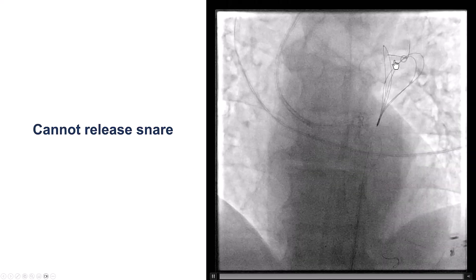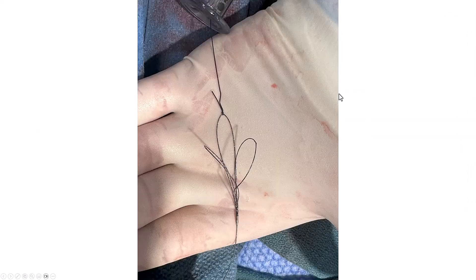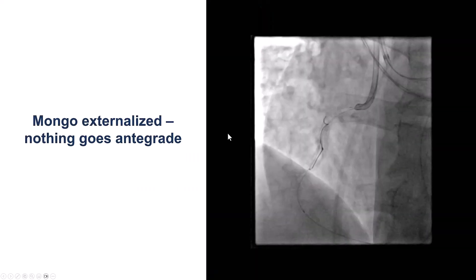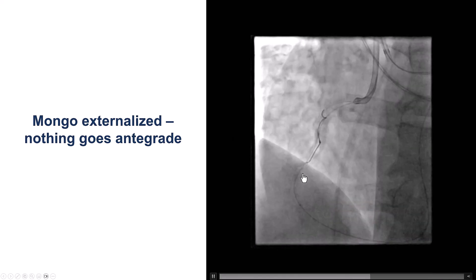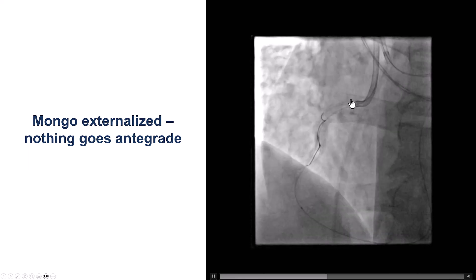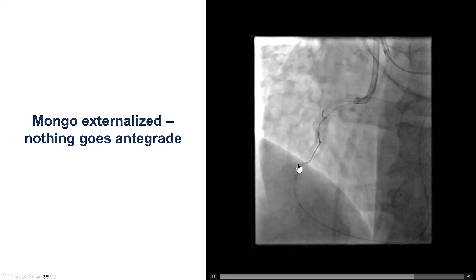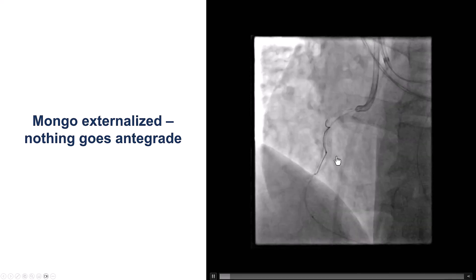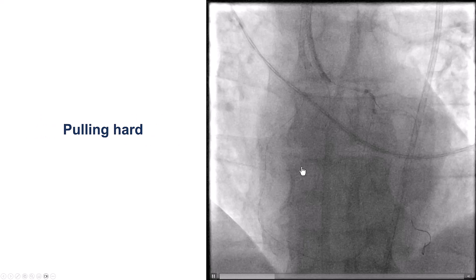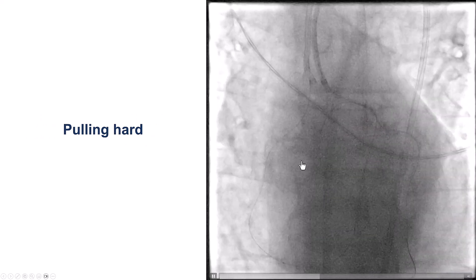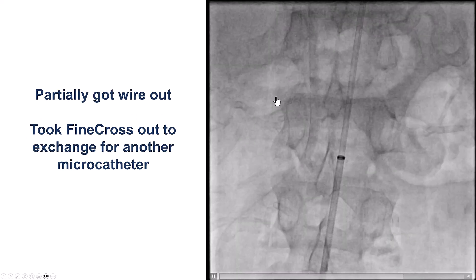As often happens with snaring, we could not release the snare, so we ended up externalizing. This is the snare bringing back the Gladius-Mungo guide wire. We thought that after externalizing we should be able to go antegrade and treat the lesion, but unfortunately we couldn't deliver anything antegrade. Likely because of a combination of calcification and tortuosity, no balloon would go past the proximal RCA — it would not even reach the level of the occlusion. We tried several techniques, but eventually it failed and we decided to bail out.